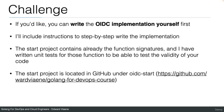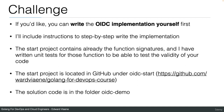The start project is located in GitHub under 'oidc-start' in the Golang for DevOps course directory. It contains function signatures and tests but no implementation yet. The solution code is in the folder 'oidc-demo'. Before every demo I'll supply information so you can try writing the code yourself, then I'll do the implementation and explain all the details needed.